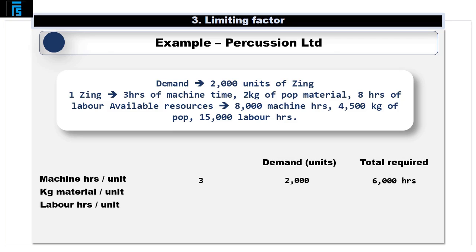To make the 2,000 units, Percussion will need to utilise 6,000 machine hours (2,000 units × 3 hours per unit), 4,000 kg of Pop (2,000 units × 2 kg per unit), and 16,000 hours of labour (2,000 units × 8 hours per unit). As Percussion Limited only has 15,000 labour hours available, this is our scarce resource and the factor that will limit our production.